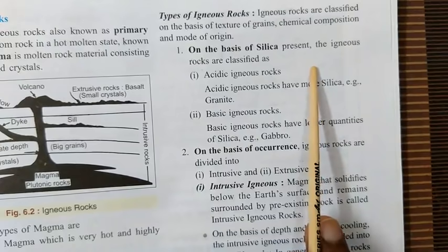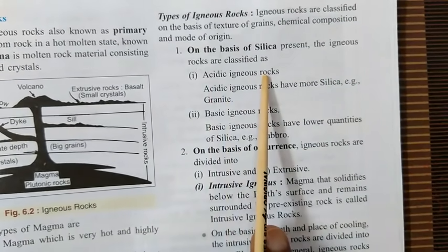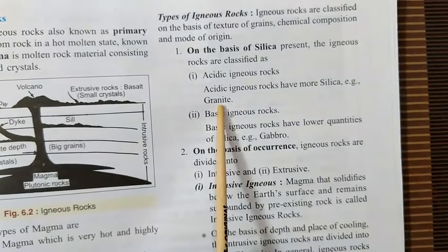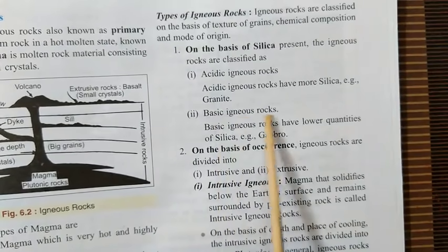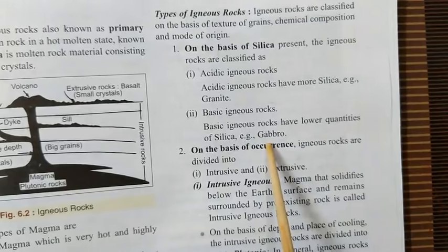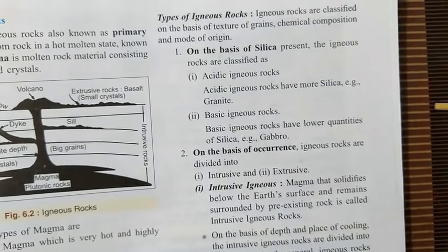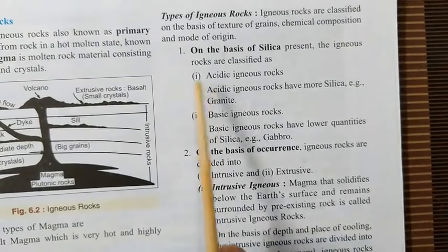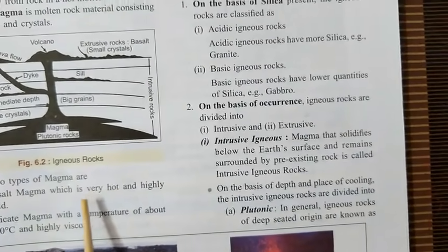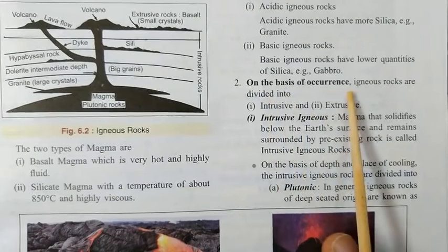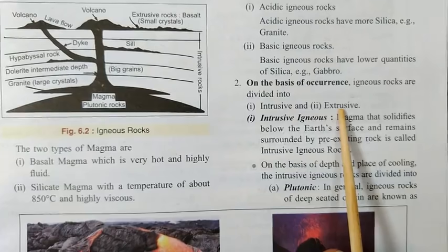On the basis of silica present, there are two types: acidic lava solidifies to form acidic igneous rocks — for example, granite, which contains more silica. Basic lava solidifies to form basic igneous rocks — for example, gabbro, which contains a lower quantity of silica. So these are the two categories of igneous rocks based on silica content.